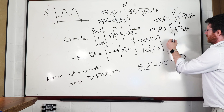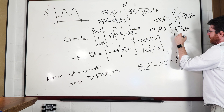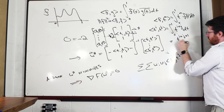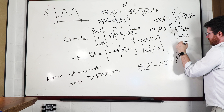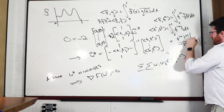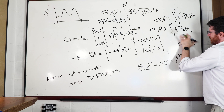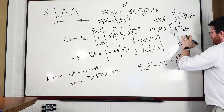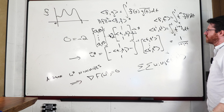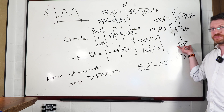This integral is easy to compute by hand. We get t^(i+j+1) divided by (i+j+1), evaluated from 0 to 1, which simply gives 1/(i+j+1). So the gram matrix entries are just these values — pretty easy.